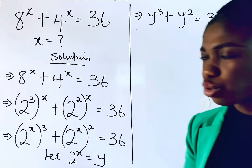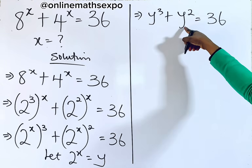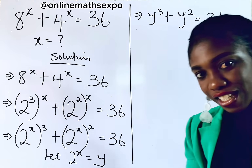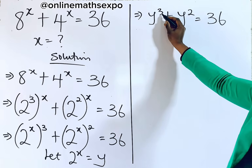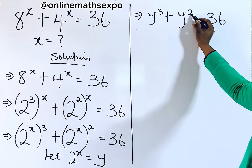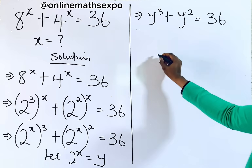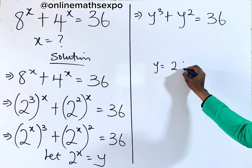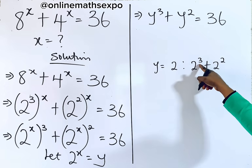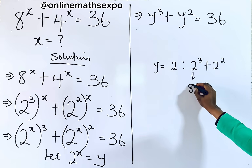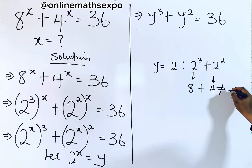Beautiful. Now what do we do? Observe carefully that this has led us to a cubic equation — the highest power of y is 3. We ask ourselves: is there any number that when raised to the power of 3 and also to the power of 2, their sum gives us 36? Let's check y equals 2: 2 cubed is 8, and 2 squared is 4, and adding these two is not equal to 36. So y equals 2 is not helpful.